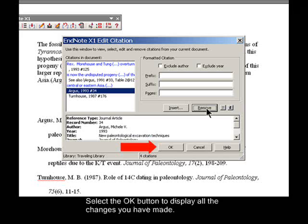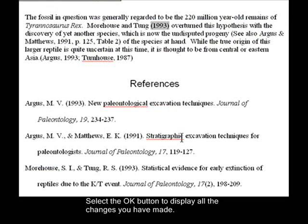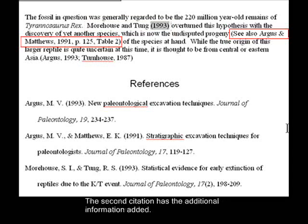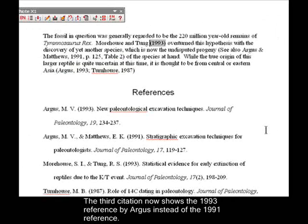Select the OK button to display all the changes you have made. In my first citation, you no longer see the author's name. The second citation has the additional information added. The third citation now shows the 1993 reference by Argus instead of the 1991 reference.